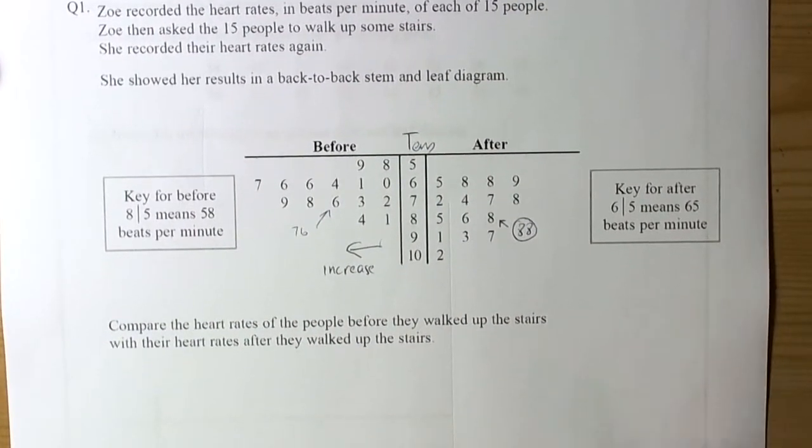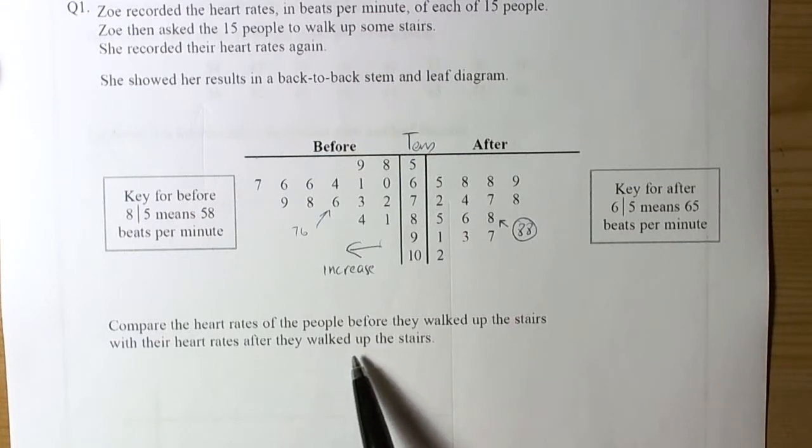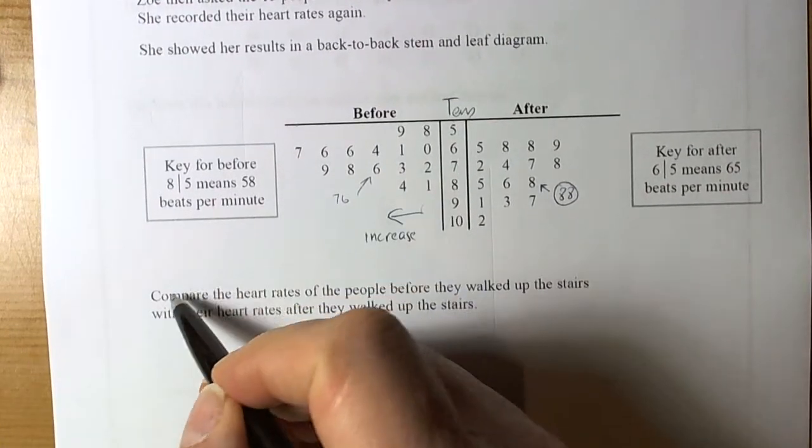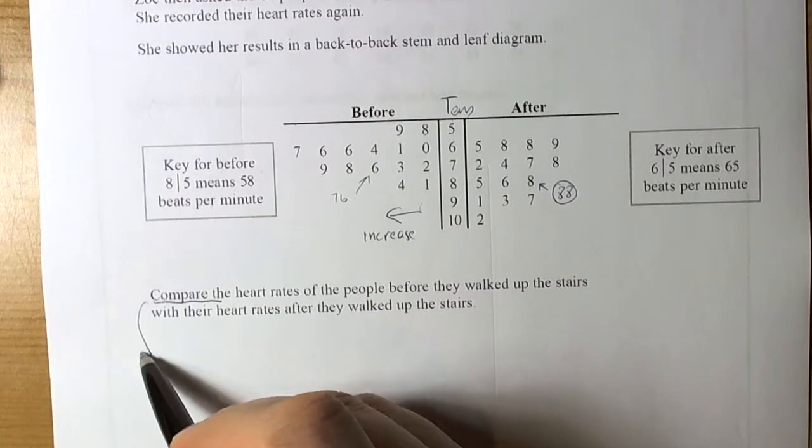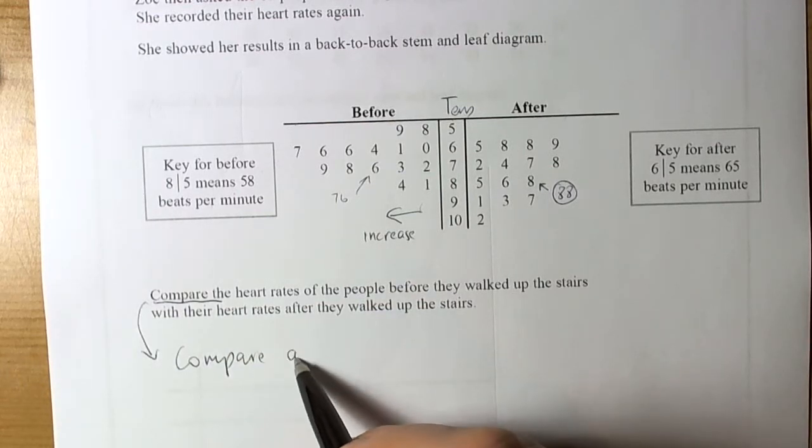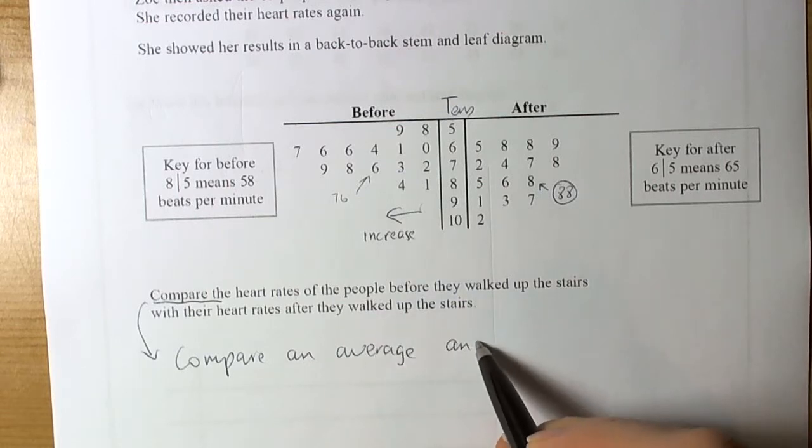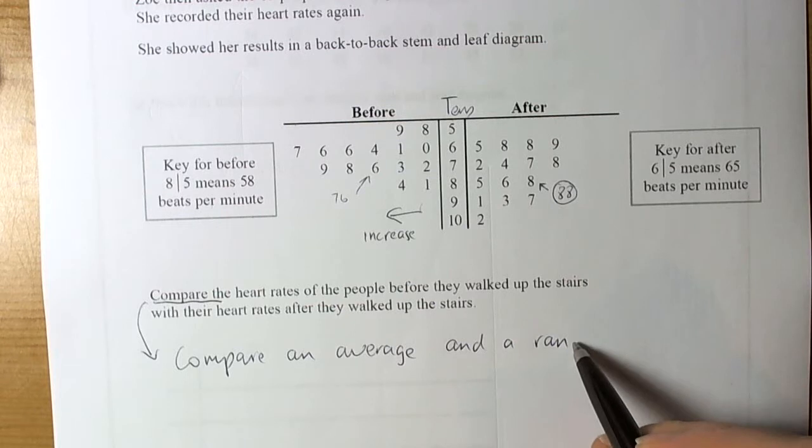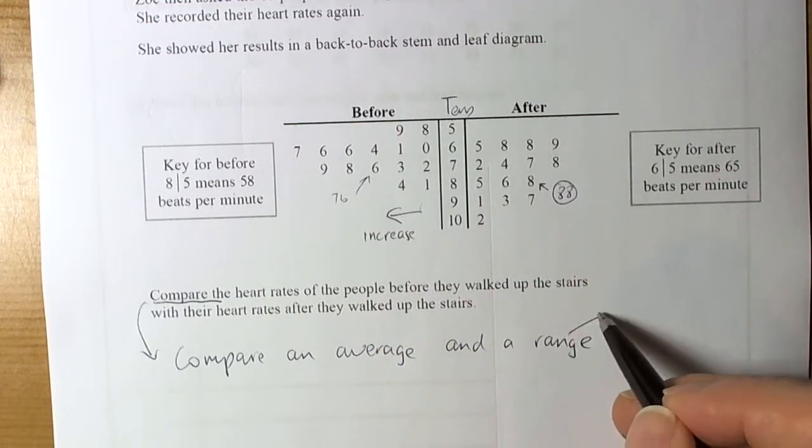So the question says compare the heart rates of the people before they walk up the stairs with heart rates after they walked up the stairs. So compare, and we've got data, and that means that we've got to compare an average. So we compare an average and a range. Now sometimes it depends on the data. There are lots of different types of averages and lots of different ranges.